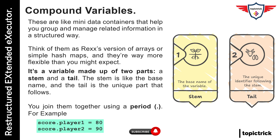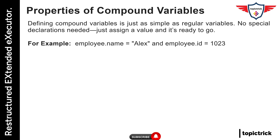This structure allows you to store multiple related values under one umbrella. Defining compound variables is just as simple as regular variables — no special declarations needed. Just assign a value and it's ready to go. You could have something like employee.name equals Alex and employee.id equals 1023, and REXX will treat each one as a separate variable under the employee family.